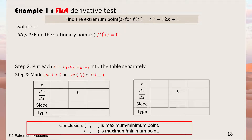Let's look at the first example using the first derivative test. We want to find the extremum point of f(x) = x³ - 12x + 1. Both methods will be shown on this same question so you can see which you prefer, though sometimes the question specifies which method to use. You must know both methods.